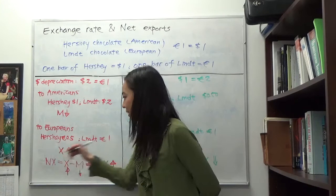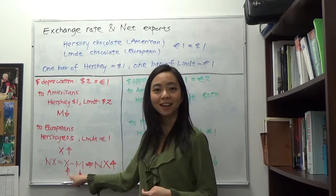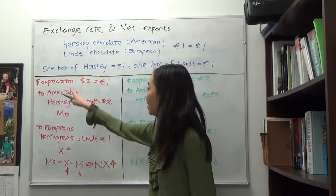Net exports equal exports minus imports. Our exports go up and our imports go down, and therefore our net exports go up when the dollar depreciates.